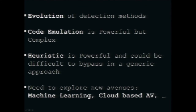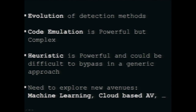To summarize: there is an evolution of detection methods — from enhanced static analysis to code emulation, which is powerful but so complex to implement that it's relatively easy to always find discrepancies between emulated and real environments to bypass it. Heuristic analysis is difficult to bypass generically, but only operates after program execution starts — sometimes too late. Technologies that deserve exploration include machine learning with neural networks, and cloud-based antiviruses which avoid performance issues, can use sandboxes, and deal with some desktop antivirus limitations. Thank you.